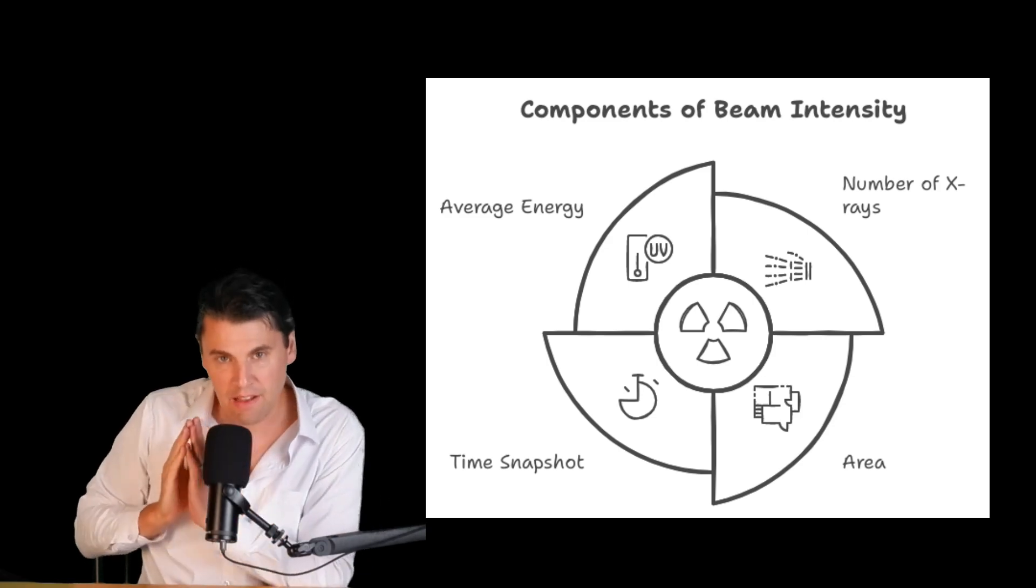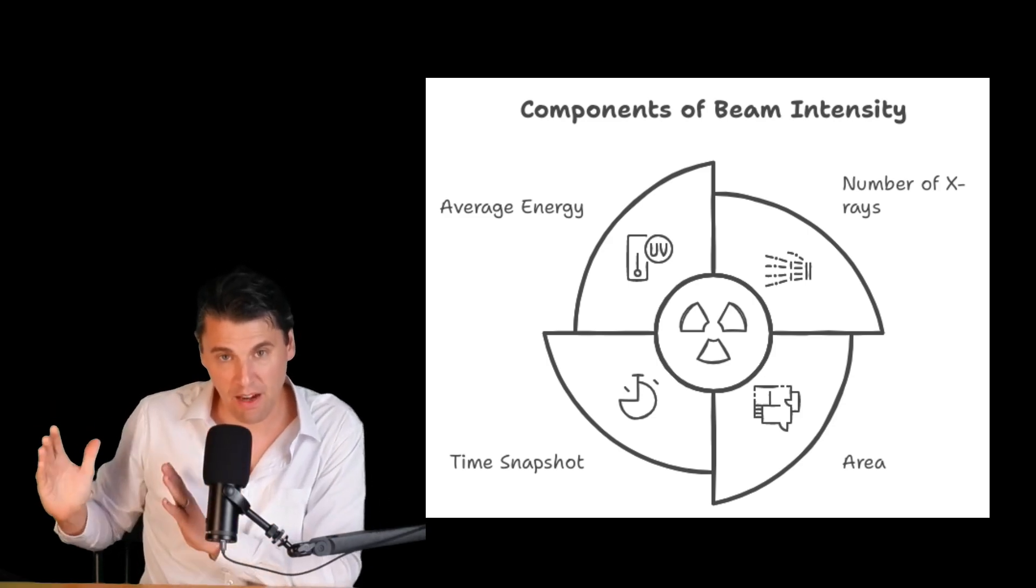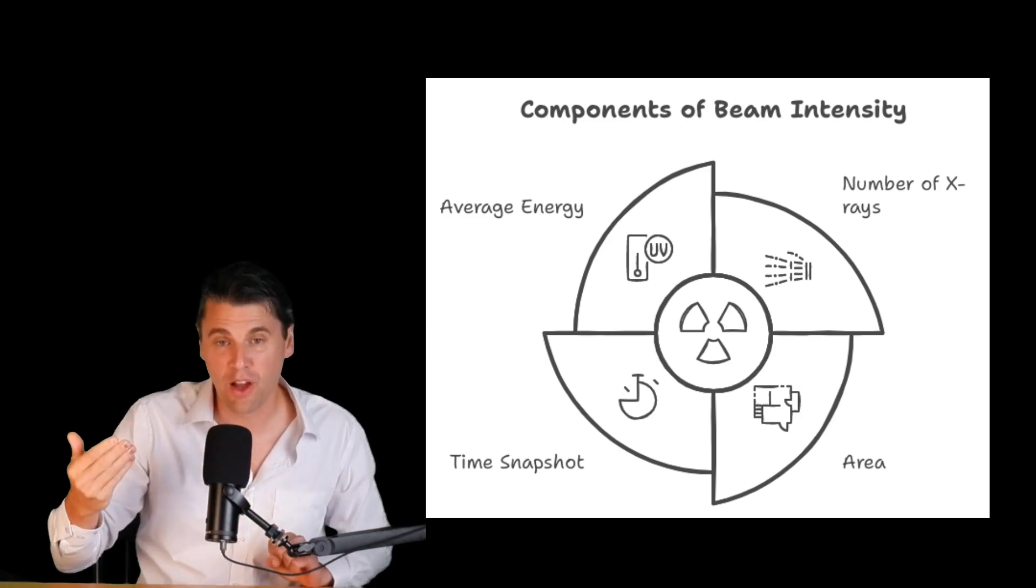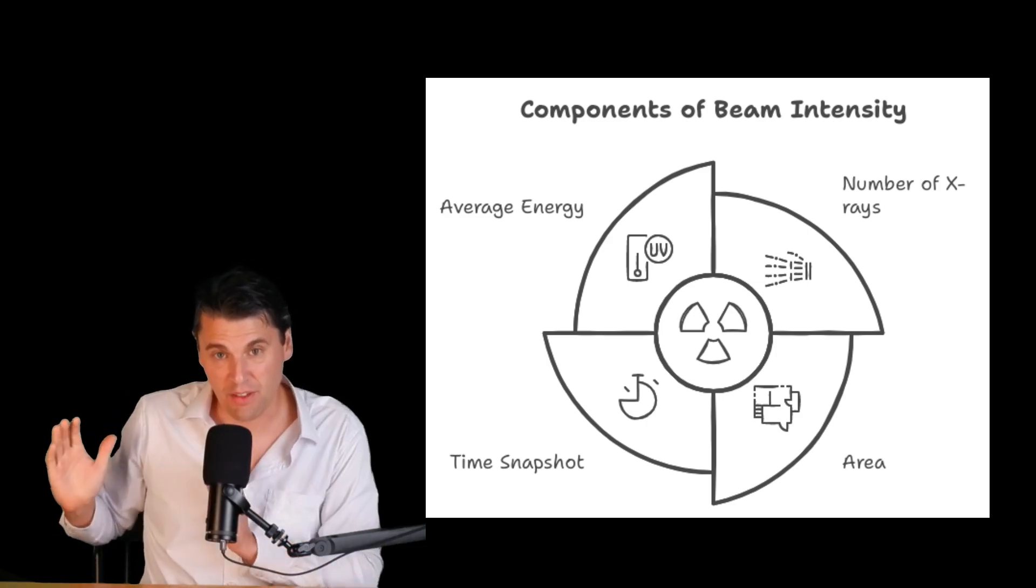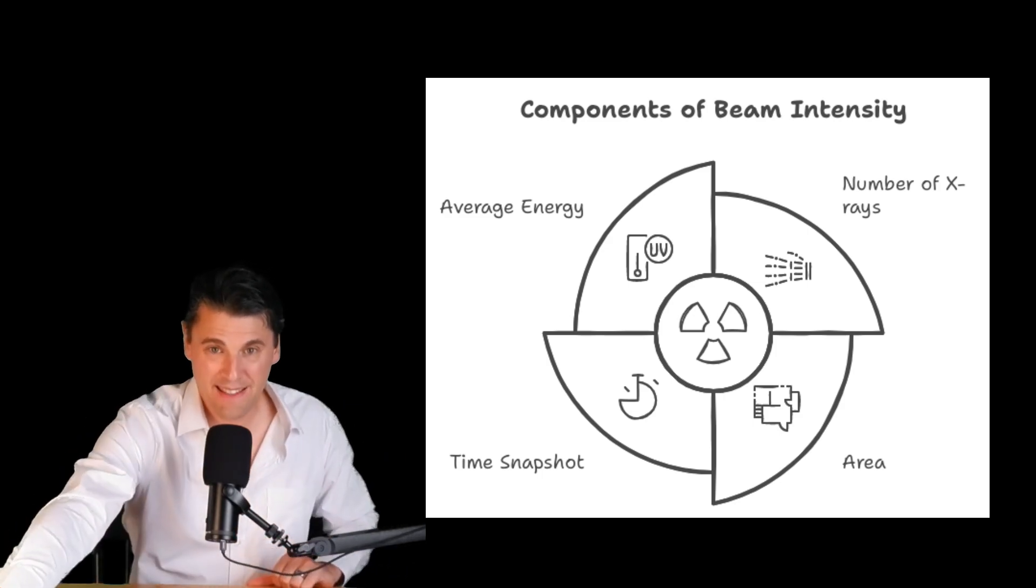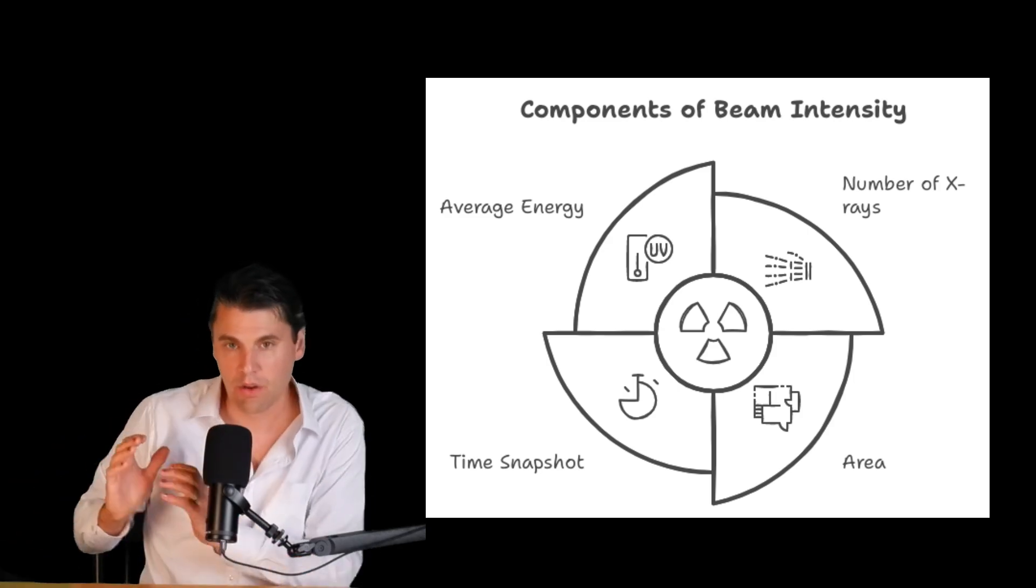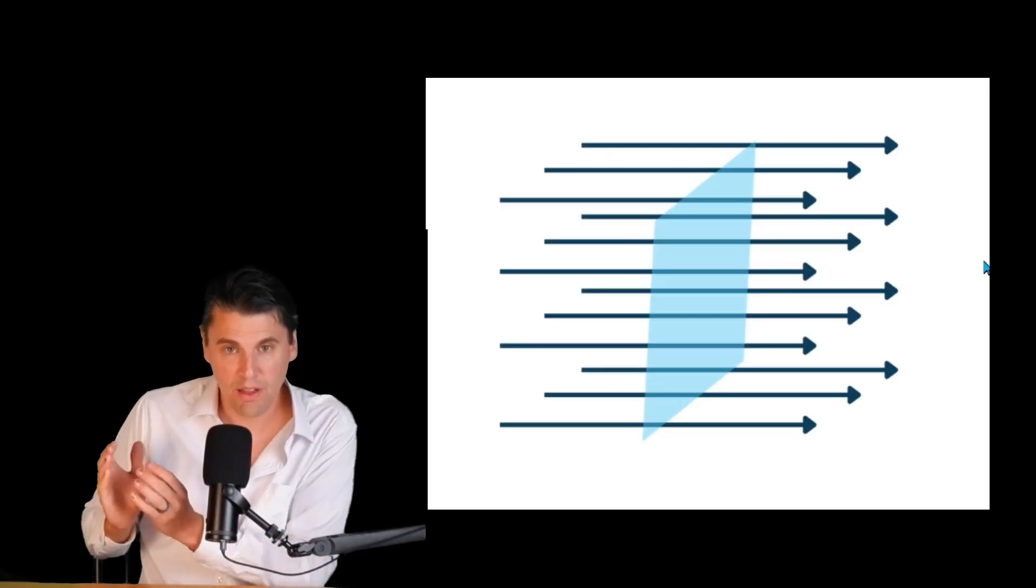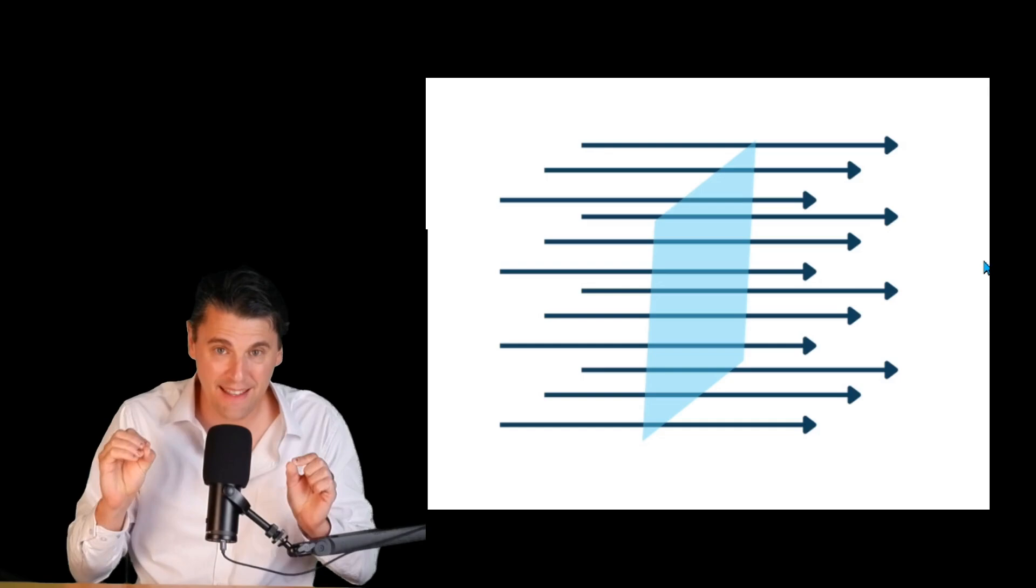We say, how many x-rays are passing through a given area, and then in a given snapshot of time, and if we wrap into that the average energy that those x-rays have, then what we're talking about is the beam intensity. That's the beam intensity where we're taking into account just a snapshot in area and a snapshot in time so that we can really identify the beam intensity.